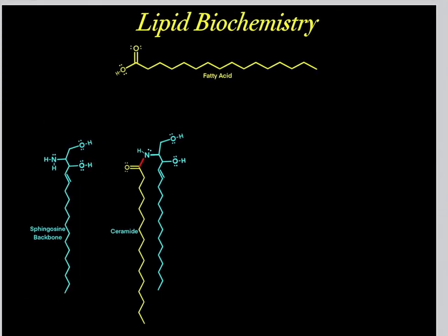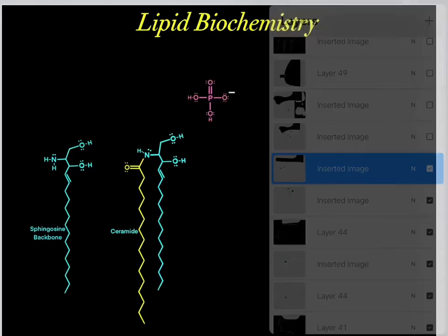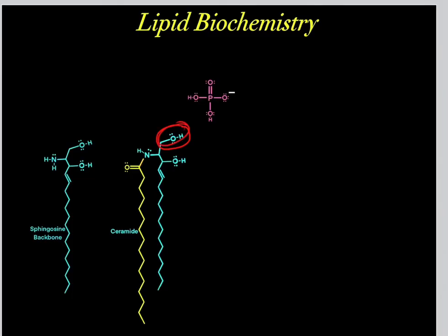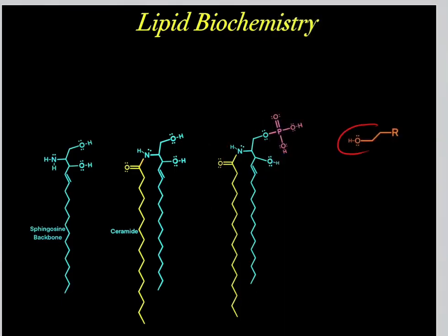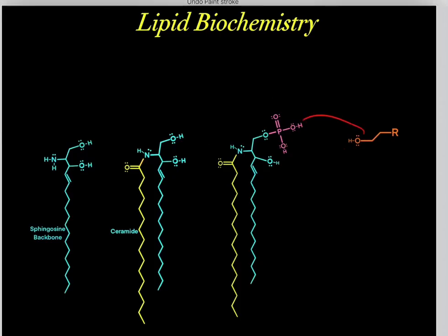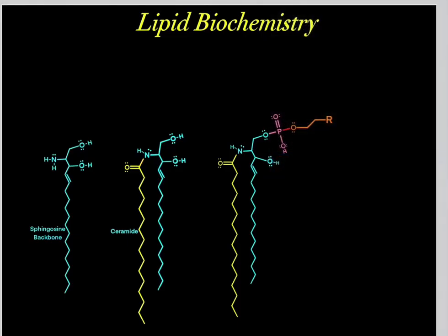This ceramide compound is extremely important — our cells use it to produce many very important lipids. Usually what we do is take this hydroxyl group, referred to as the head group, and use it to add a phosphate group through mechanism two. We attack forming a bond, we break a bond, these electrons fall on this oxygen, and we form this phosphorylated ceramide. Once we form this phosphorylated ceramide, we can add other hydroxyl groups. It doesn't matter what this chemical structure is — as long as it has a hydroxyl group, we can add it through mechanism two, forming this phosphodiester.